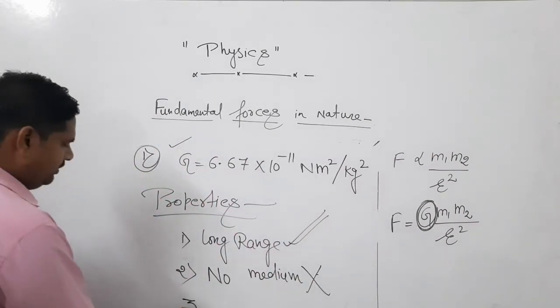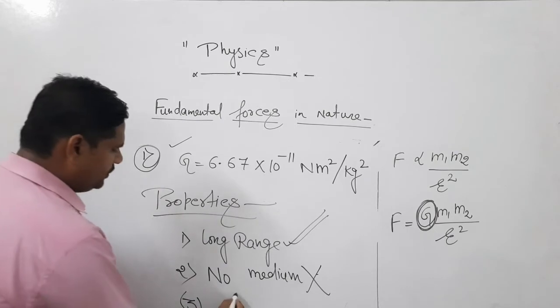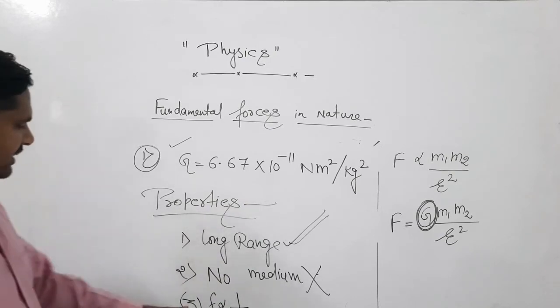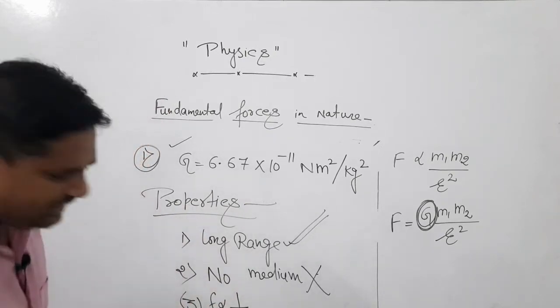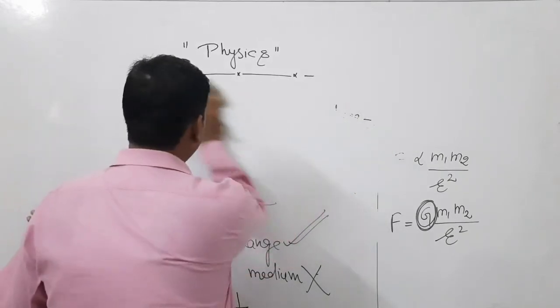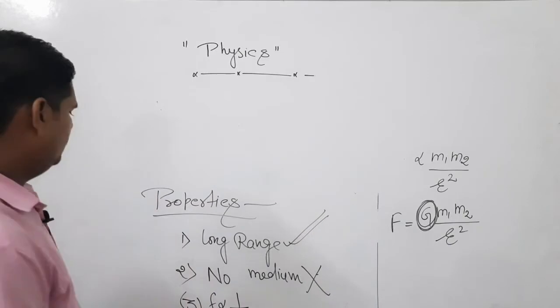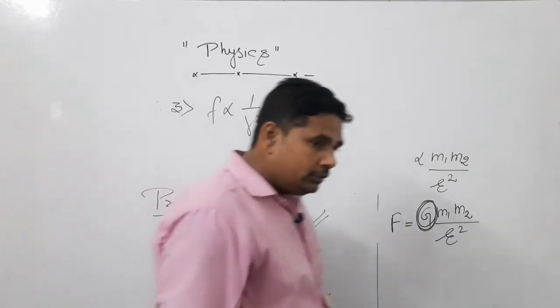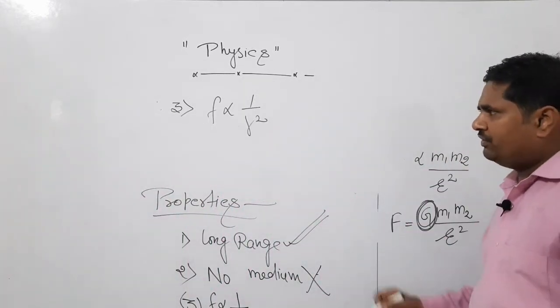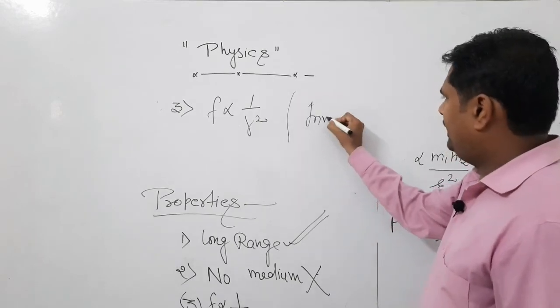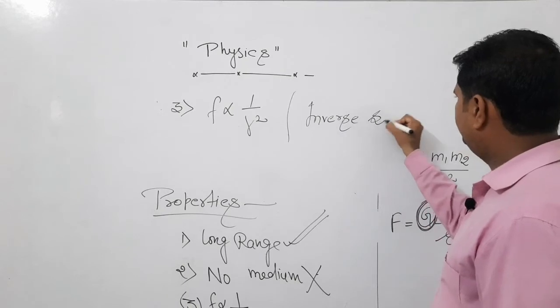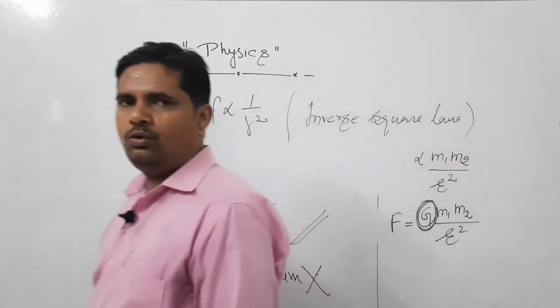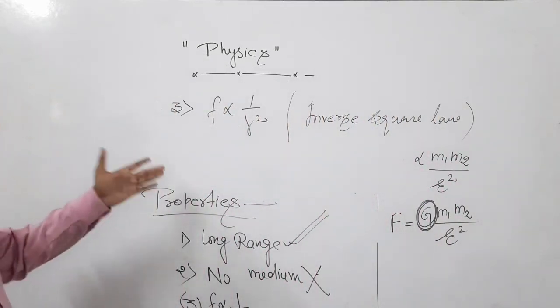And number three, most important part. In this force you noticed one thing: force is inversely proportional to the square of distance. Force is inversely proportional to the... I think it's not clear visible, I have to write down at this level. Third one is: force is inversely proportional to the square of distance. Those that are inverse square, we give them one name and that name is inverse square law. Means this force obeys inverse square law. This is one property.